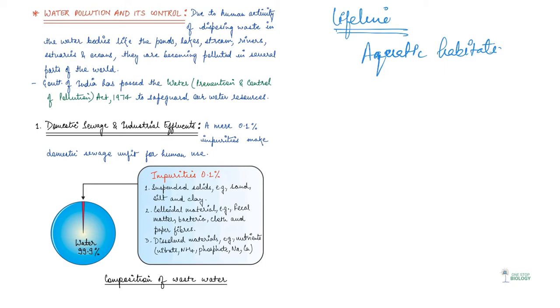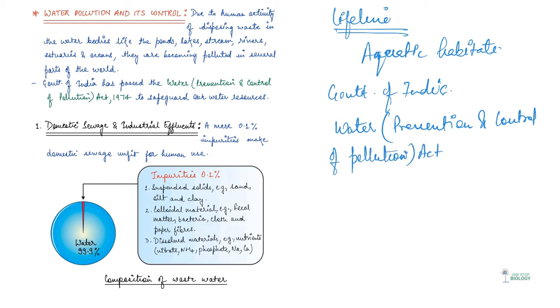But due to several different kind of activities of us, the ponds, lake, ocean, rivers, everything are becoming polluted in several parts of the world. So basically, realizing the importance of maintaining the cleanliness of water, the government of India passed Water Prevention and Control of Pollution Act in 1974 to safeguard our water resources.